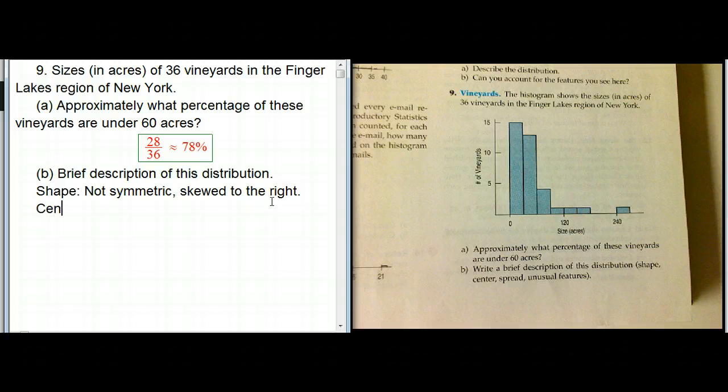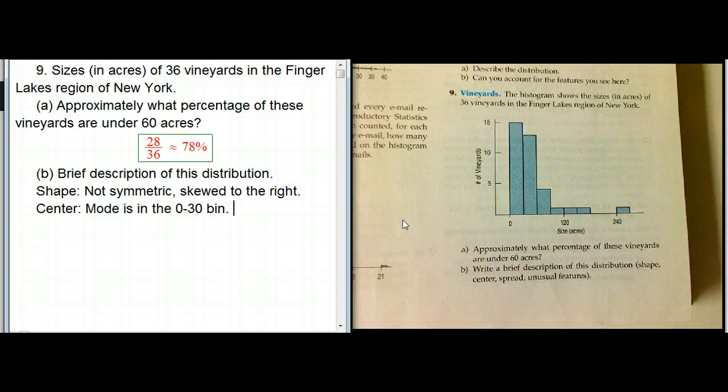In terms of center, there's various measures of center we'll discover over the next couple chapters. But the only one we know now is the mode is somewhere in the 0 to 30 bin. So the most popular bin here is 0 to 30, the small size. There's a lot of small vineyards, a fair number just a little bit bigger, and then it drastically goes down. But there are some ones that are much bigger.